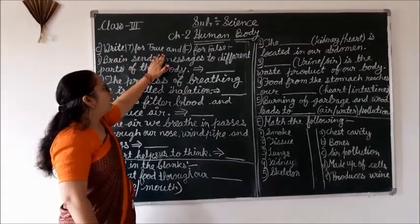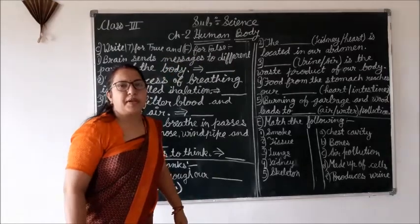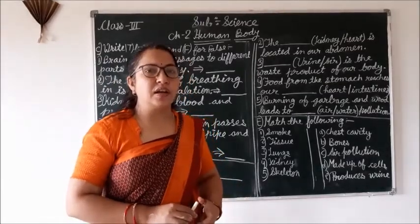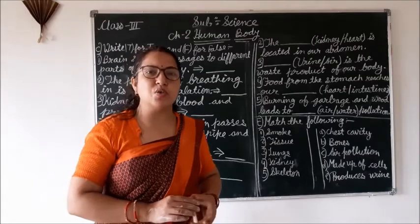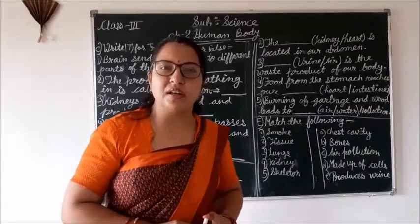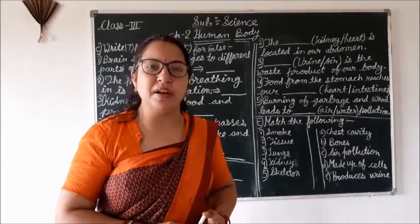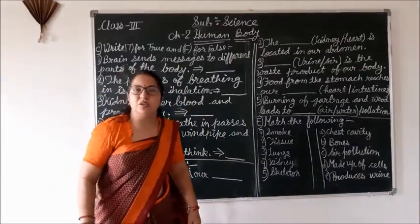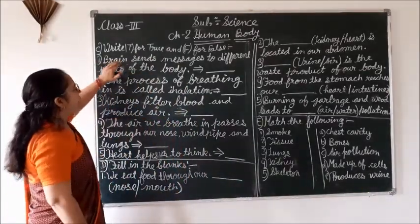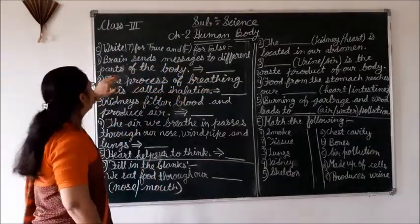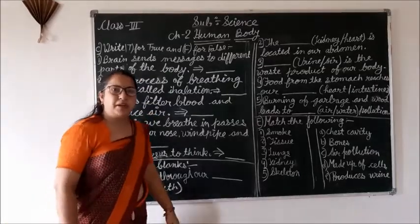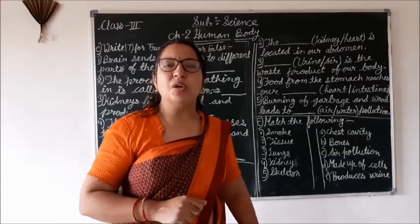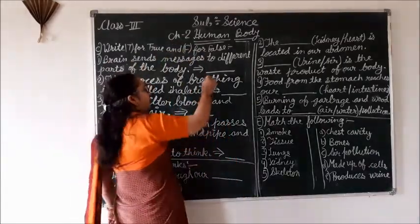Write T for True and F for False. We can write only true and false. The first question is: brain sends messages to the different parts of the body. Yes, this is a true statement. We can write T.